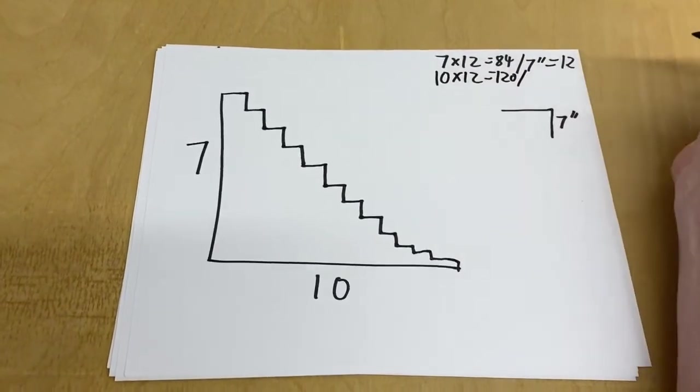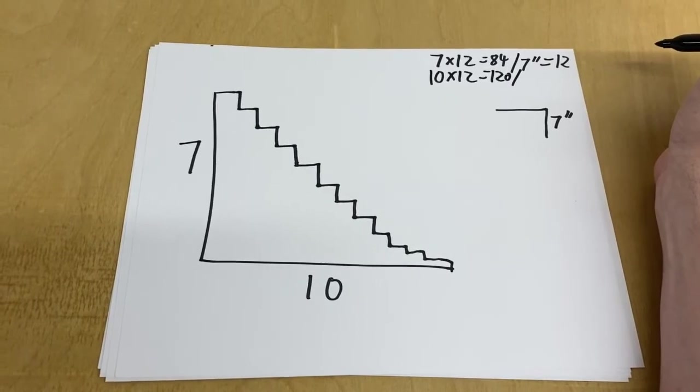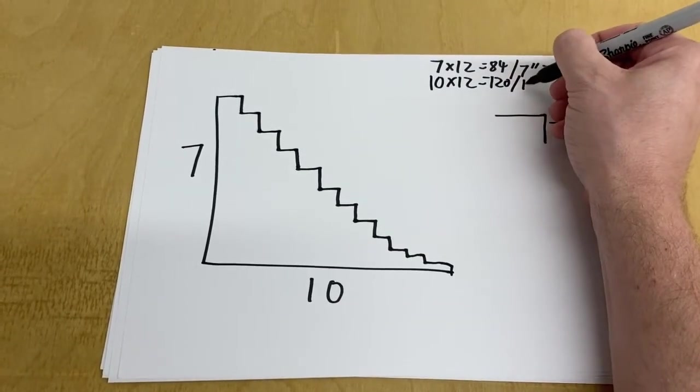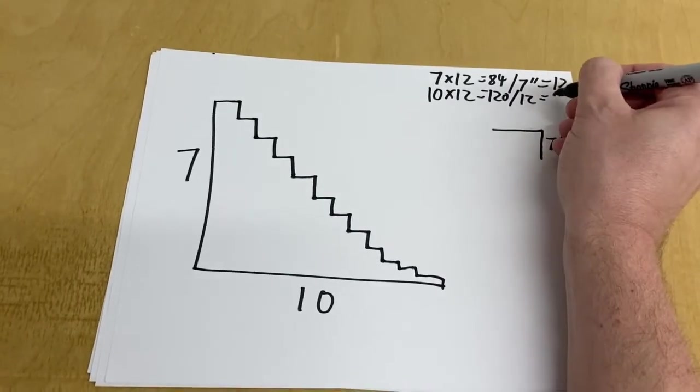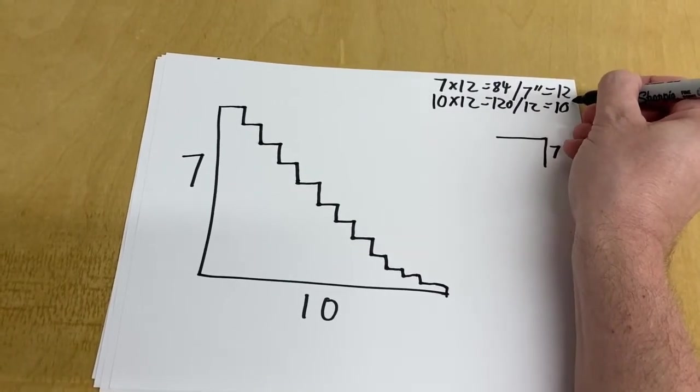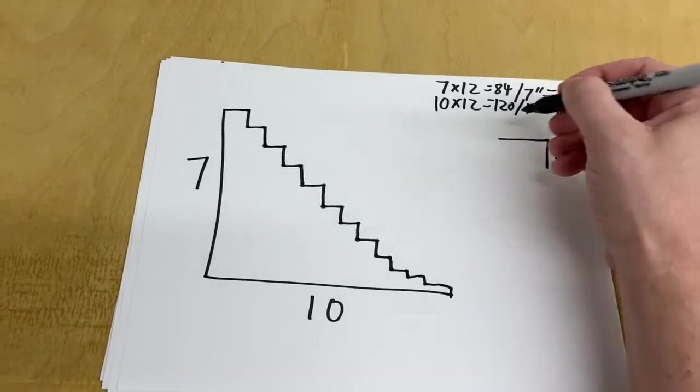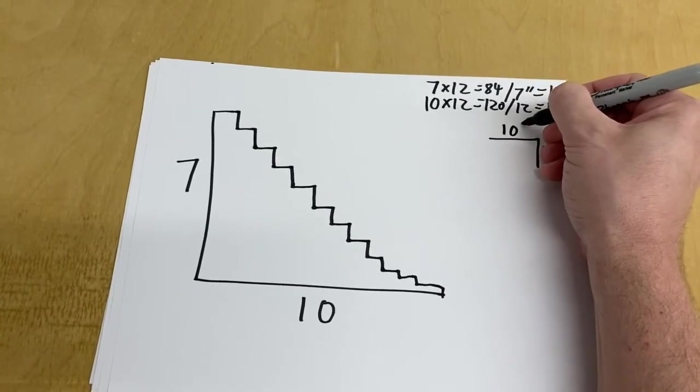And then we're going to divide that by the number of steps we have, which is conveniently 12. So that gives us a stair run of 10 inches. So 10 inches.